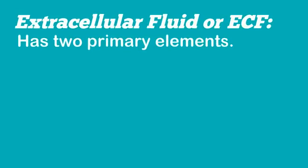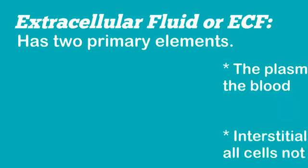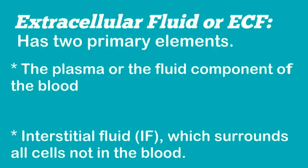ECF has two primary elements: the plasma, or the fluid component of the blood, and interstitial fluid (IF), which surrounds all cells not in blood. Approximately 20% of ECF is found in plasma.